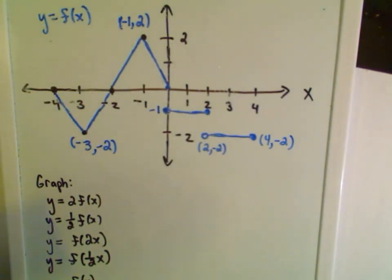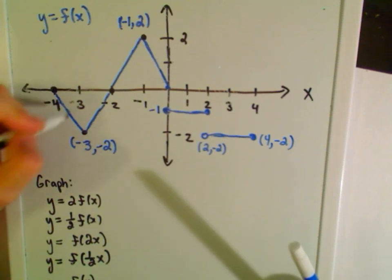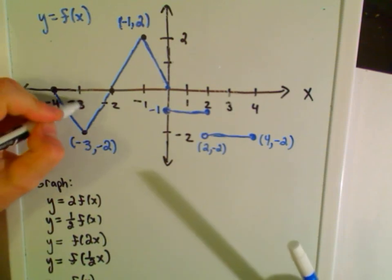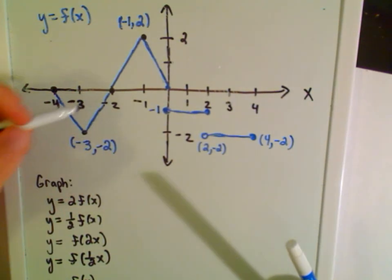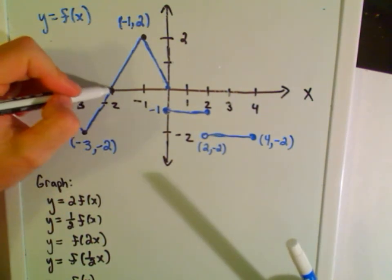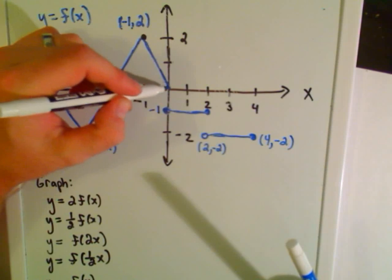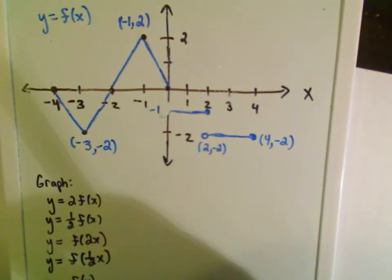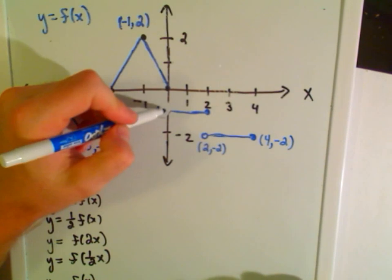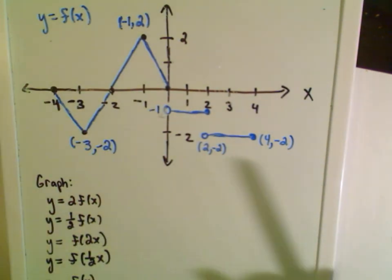It's a sawtooth function on the left-hand side. It has an x-intercept at negative four. At x = -3, it's at y = -2. At x = -2, it goes through zero. At x = -1, it's up at positive two. At x = 0, it's at zero, with an open circle at x = -1.